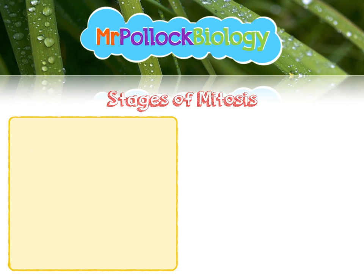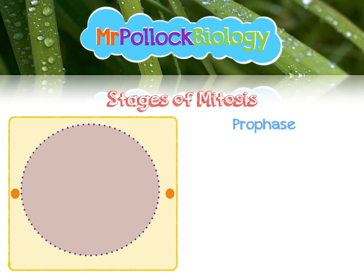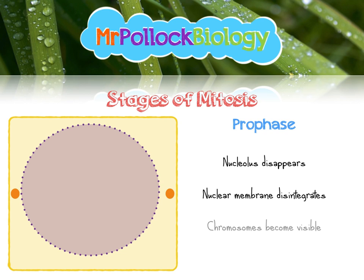Next up we've got prophase, and we've got a bunch of things happening here. You'll notice that the nucleolus has disappeared, and also the nuclear membrane is disintegrating. We start to see our genetic information — chromosomes — becoming visible. Here are two chromosomes, each made up of two pairs of sister chromatids. It's really important that you can differentiate between chromosomes and chromatids. The main thing you're going to see in prophase is the nuclear membrane going away and the chromosomes becoming visible.